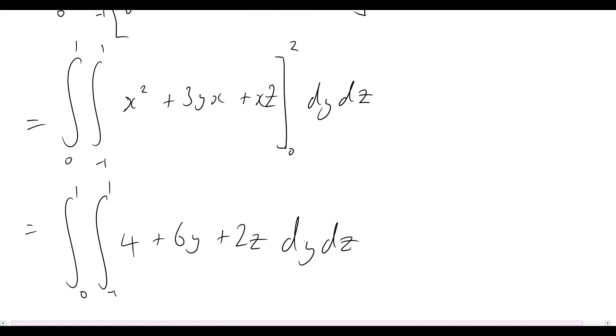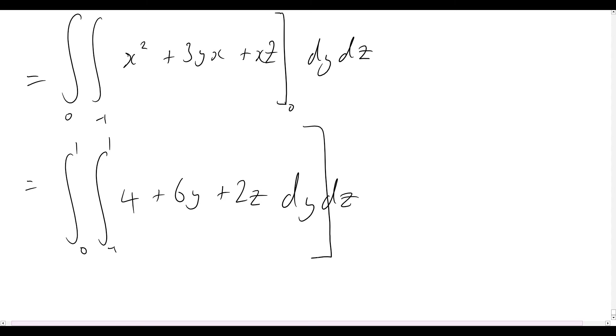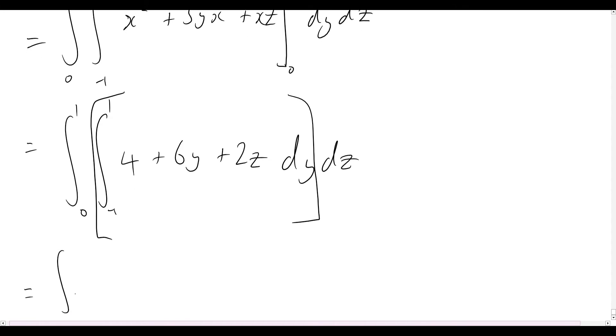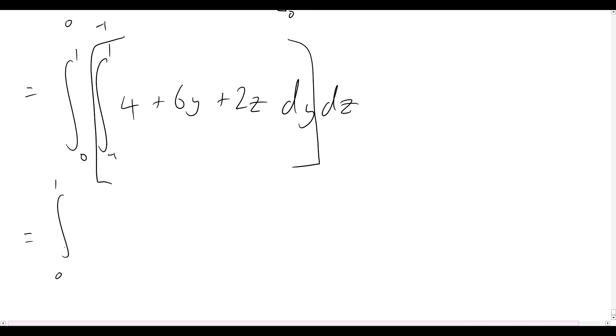So now we've got dy on the inside here. So as you might imagine, what we'll do is we're going to go through and think about separating out that middle section and just evaluating that like we normally would. Well, again, we would have our integral on the outside, so from 0 to 1. Now let's quickly integrate this with respect to y. So we know that that's now going to become 4y, and then plus 6y, that will become plus 3y squared. And then that plus 2z, that's just going to become plus 2yz. And this is now being integrated from minus 1 to 1, and we'll chuck that dz on the outside there.